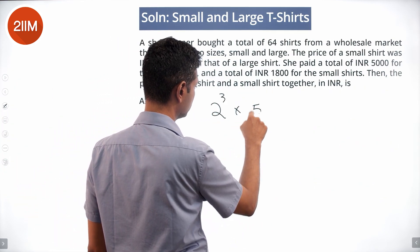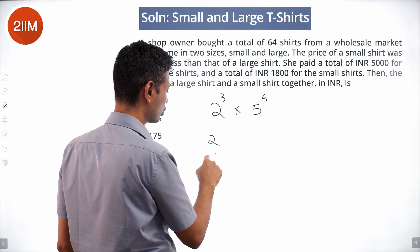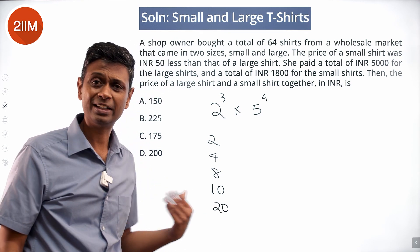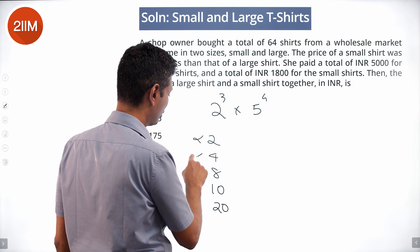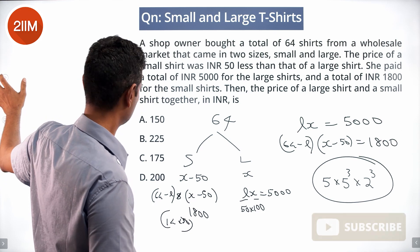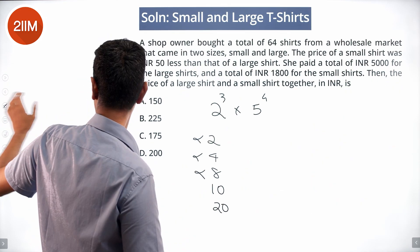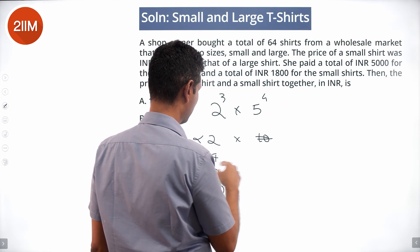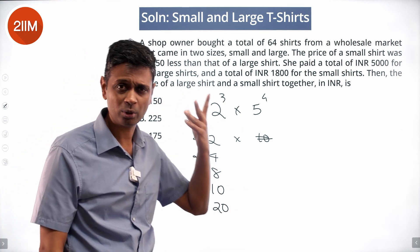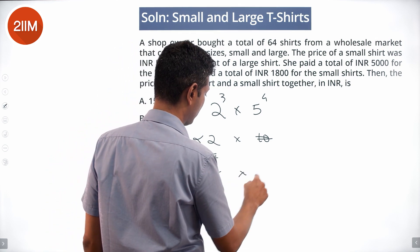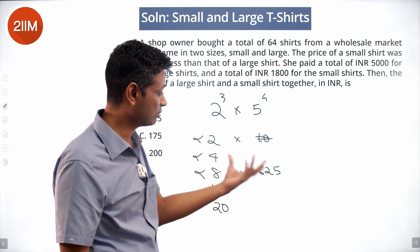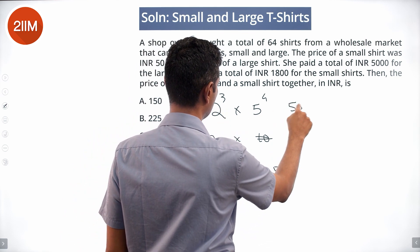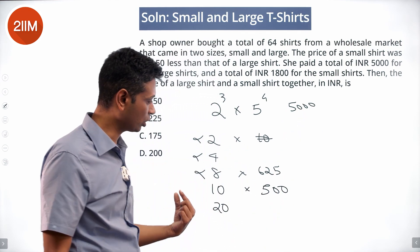So 2 cubed into 5 to the power 4. I can write this as different combinations and then see which works. 2, 4, 8 are too small. 2 into 5 to the power 4 is a very large number. 8 into 5 to the power 4 is 625, doesn't work. 10 into 500, 14 into 450, too large. 20 into 250.